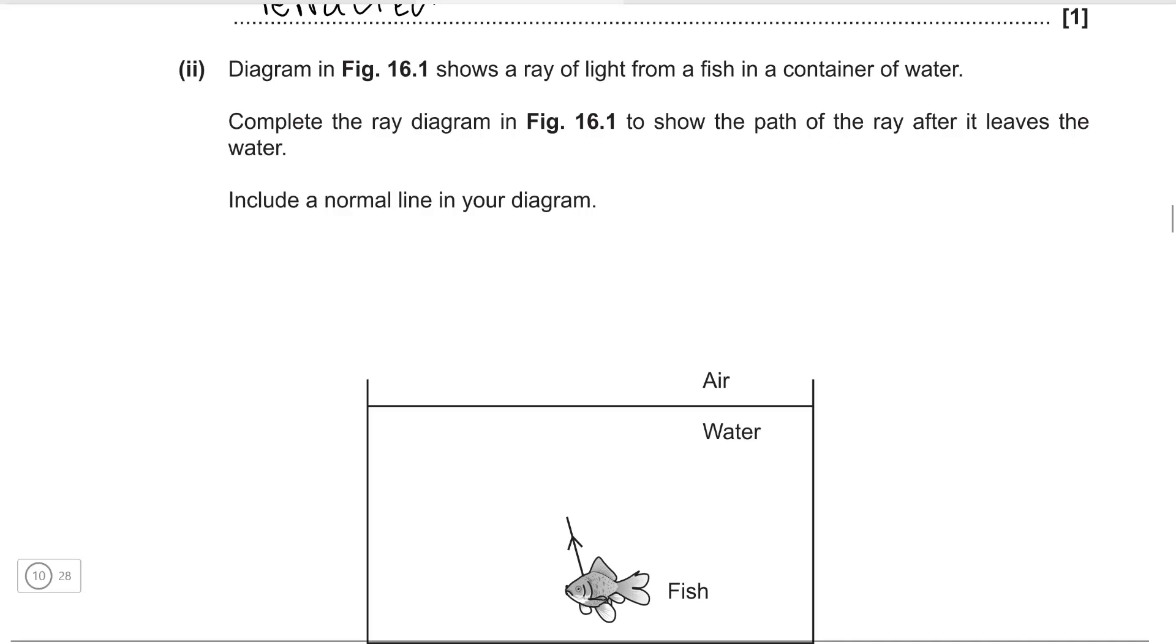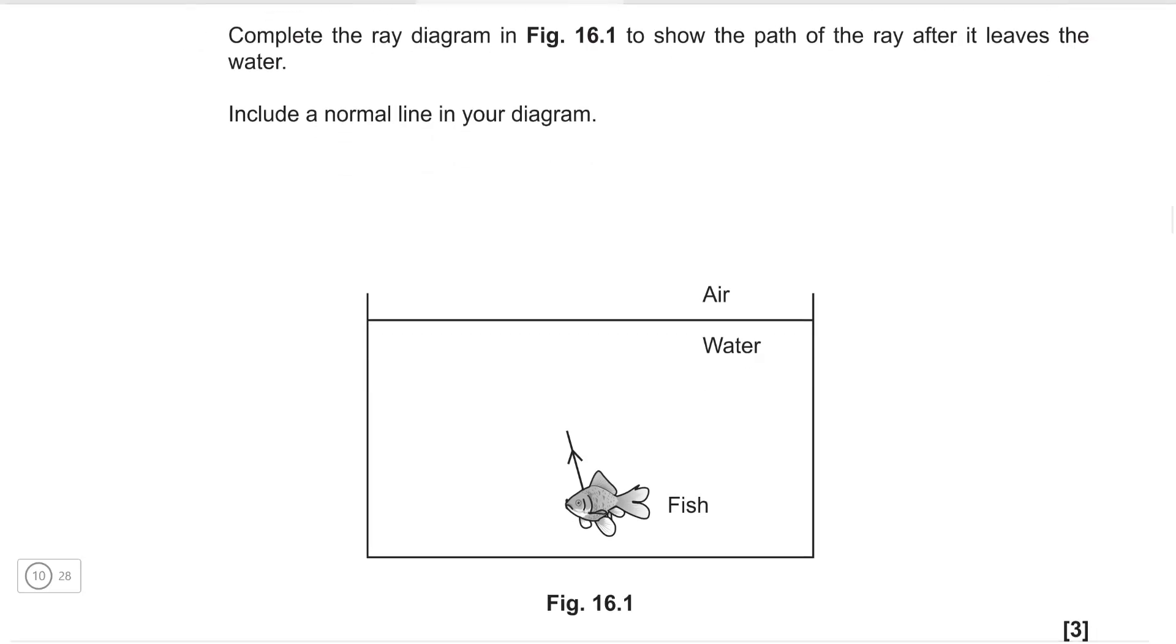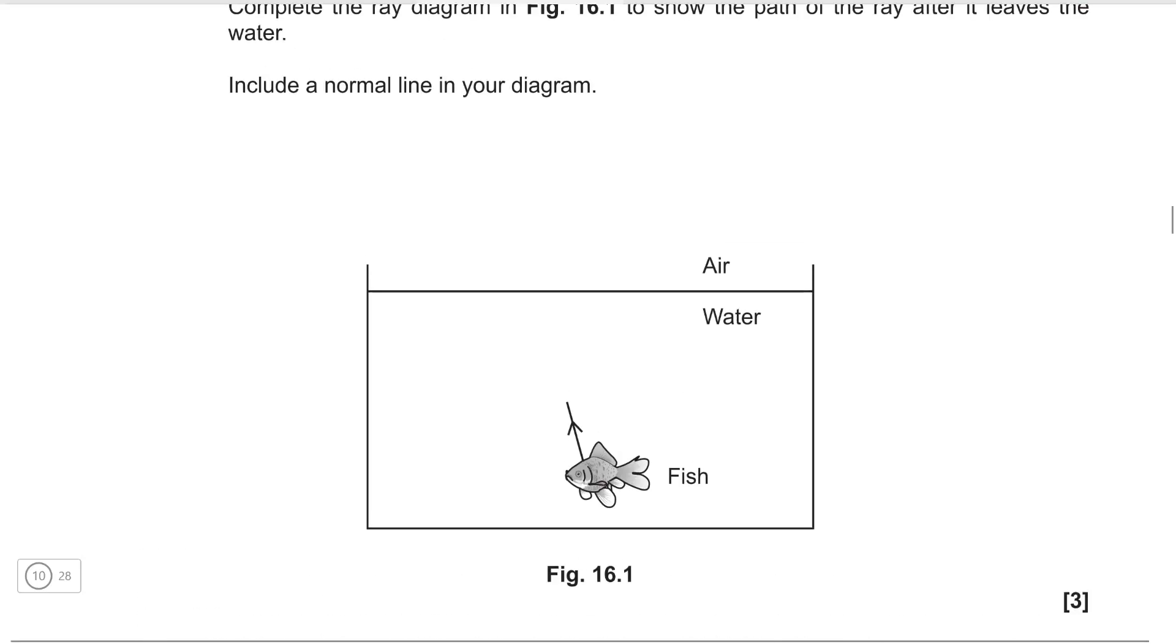Okay let's have a look at this diagram. Shows a ray of light from a fish in a container of water. Complete the ray diagram. Show the path of the ray after it leaves the water. Include a normal line in your diagram.